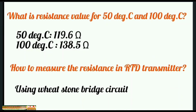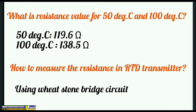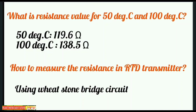What is the resistance value at 50 degrees Celsius and 100 degrees Celsius? At 50°C: 119.6 ohms. At 100°C: 138.5 ohms. How to measure the resistance in an RTD transmitter using a Wheatstone bridge circuit?